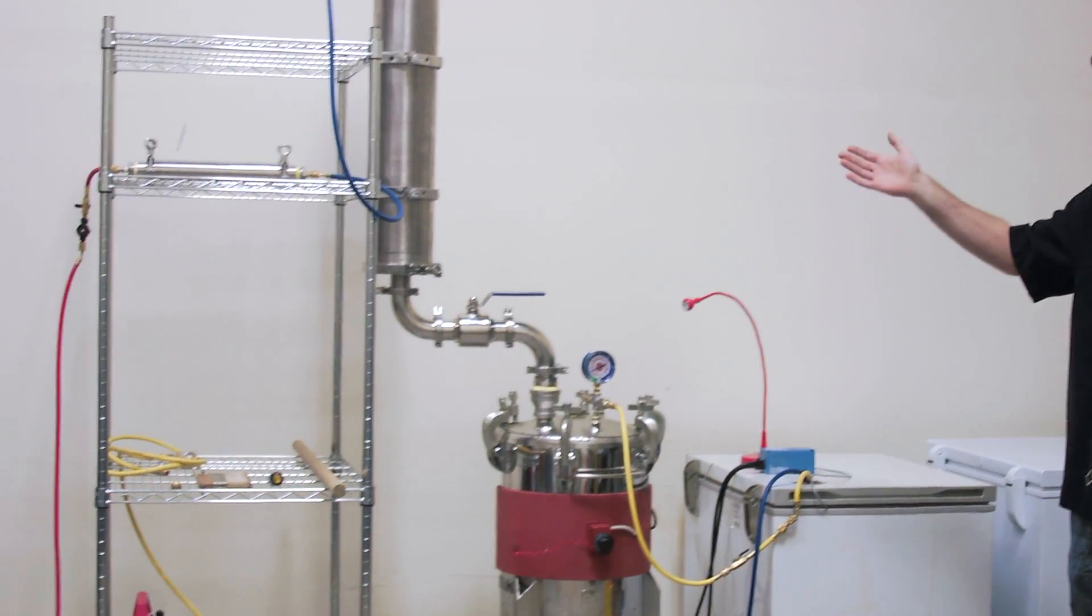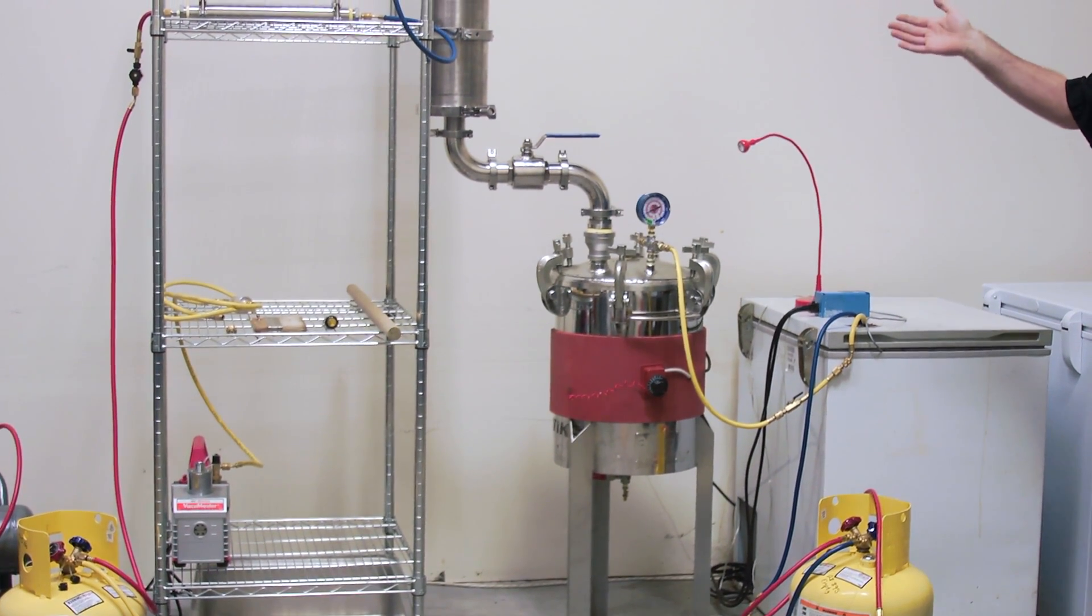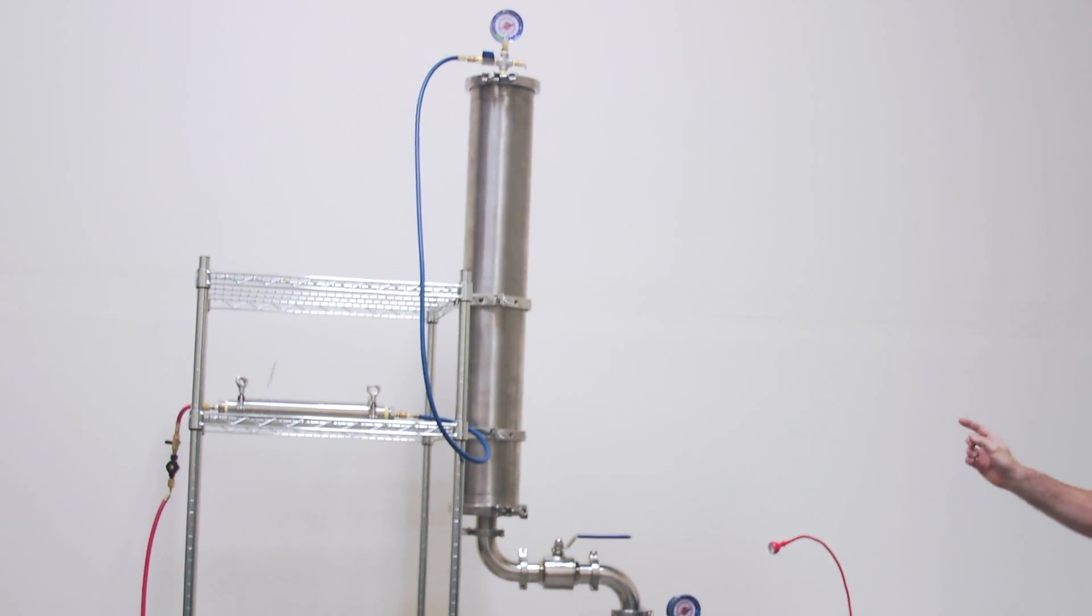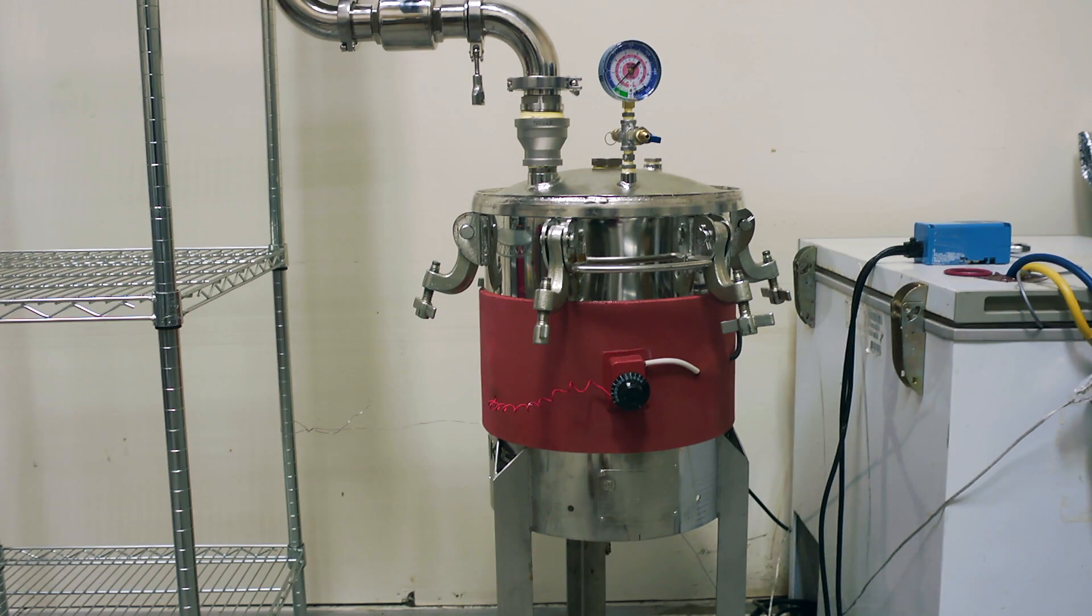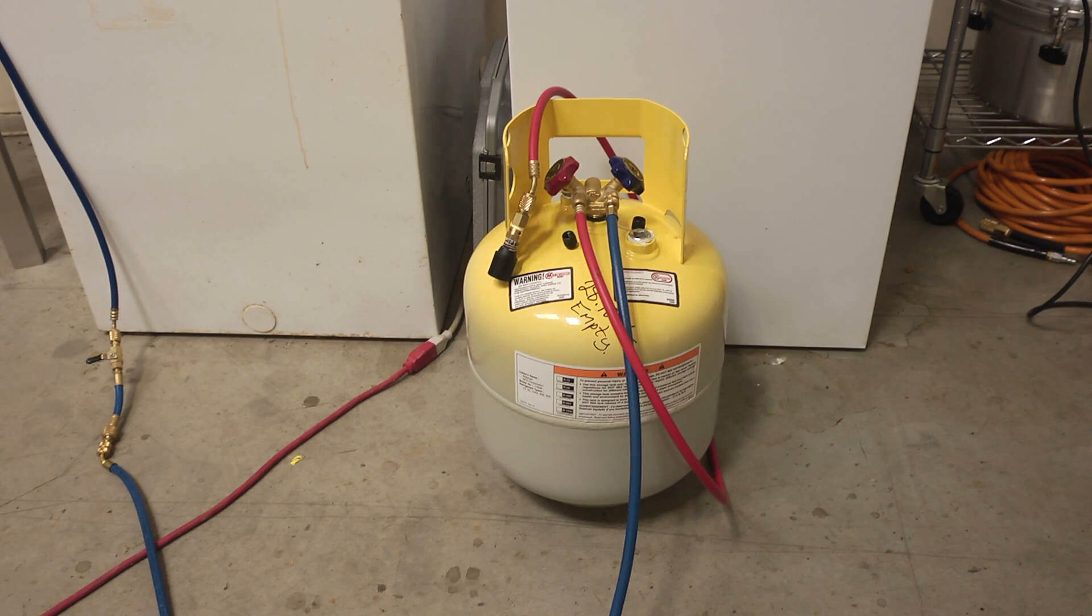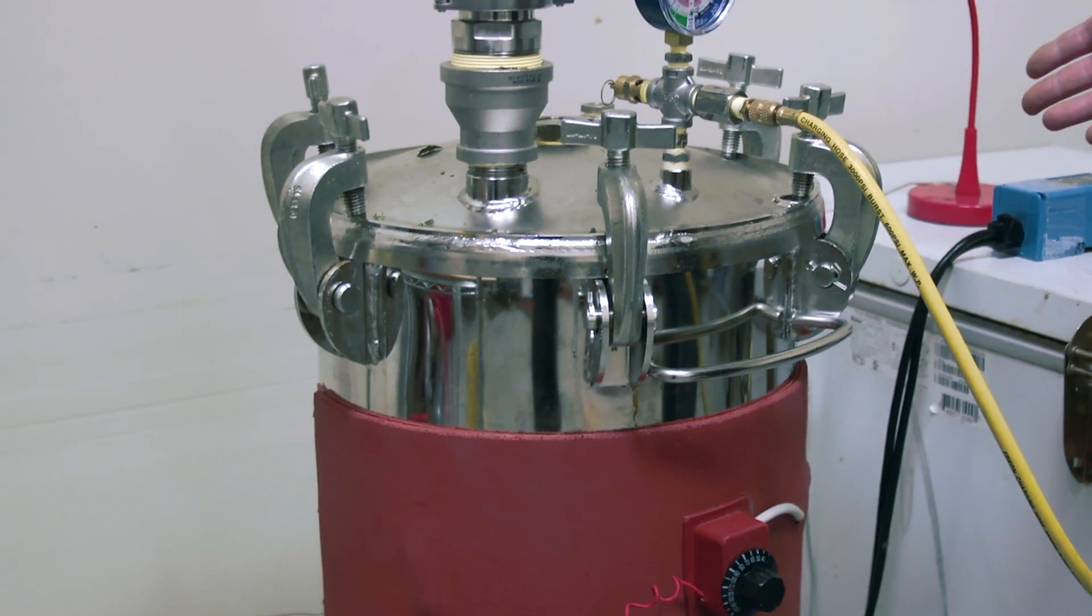This is our liquid solvent extraction system. It consists of four basic components: the fill tank, the extraction chamber, the collection vessel, and the recovery tank. There are more additional accessories and I'll explain those.